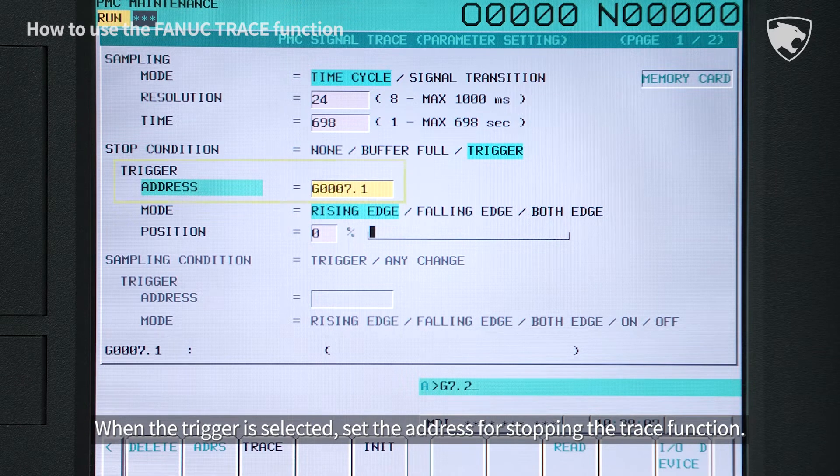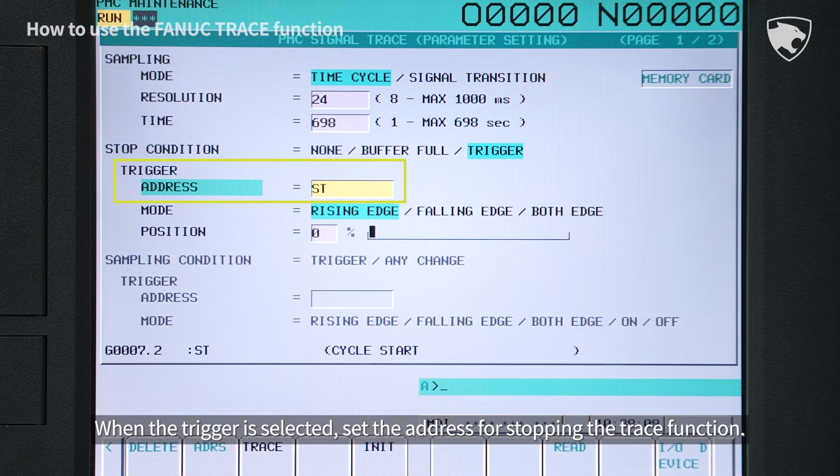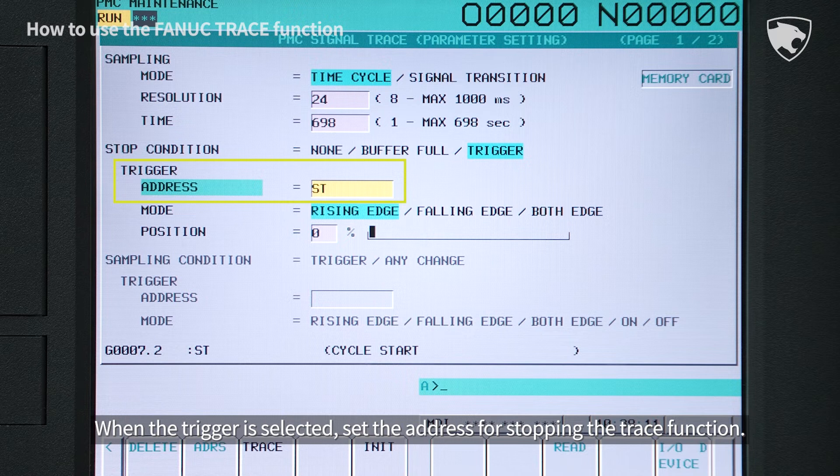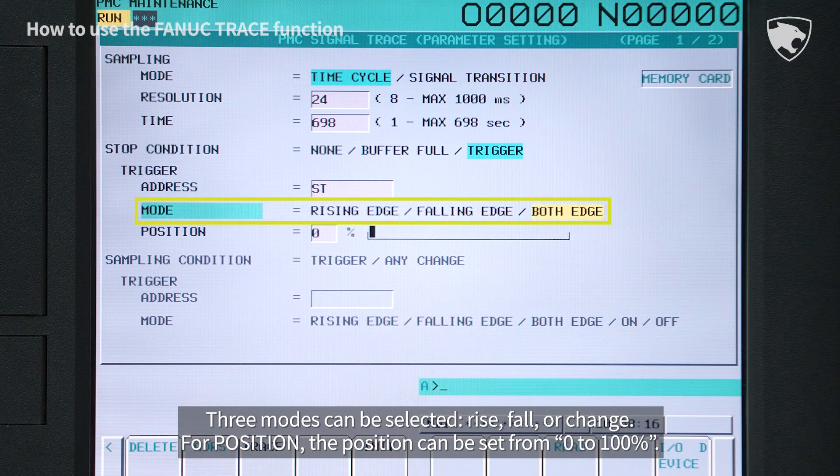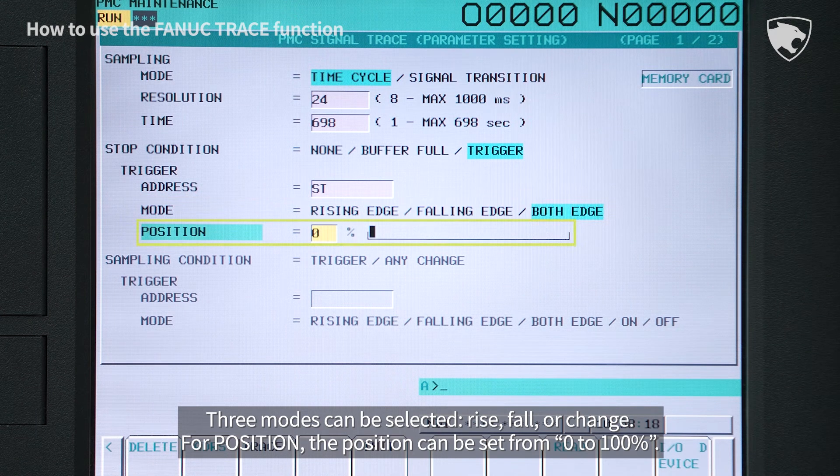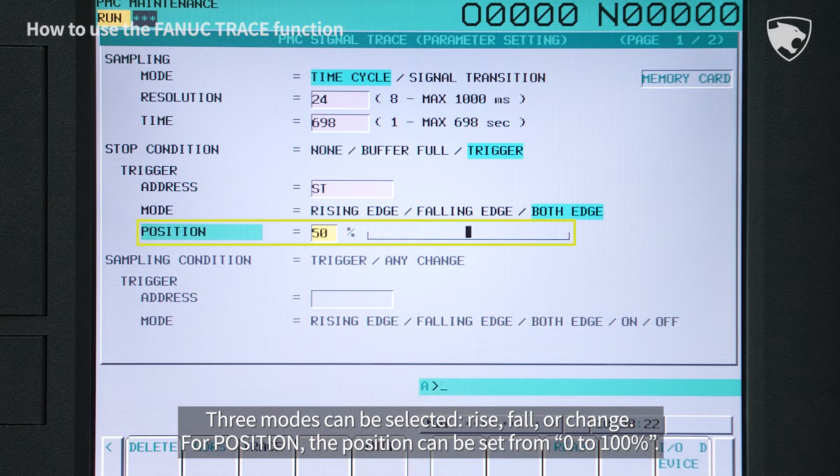When the trigger is selected, set the address for stopping the trace function. Three modes can be selected: rise, fall, or change. For position, the position can be set from 0 to 100 percent.